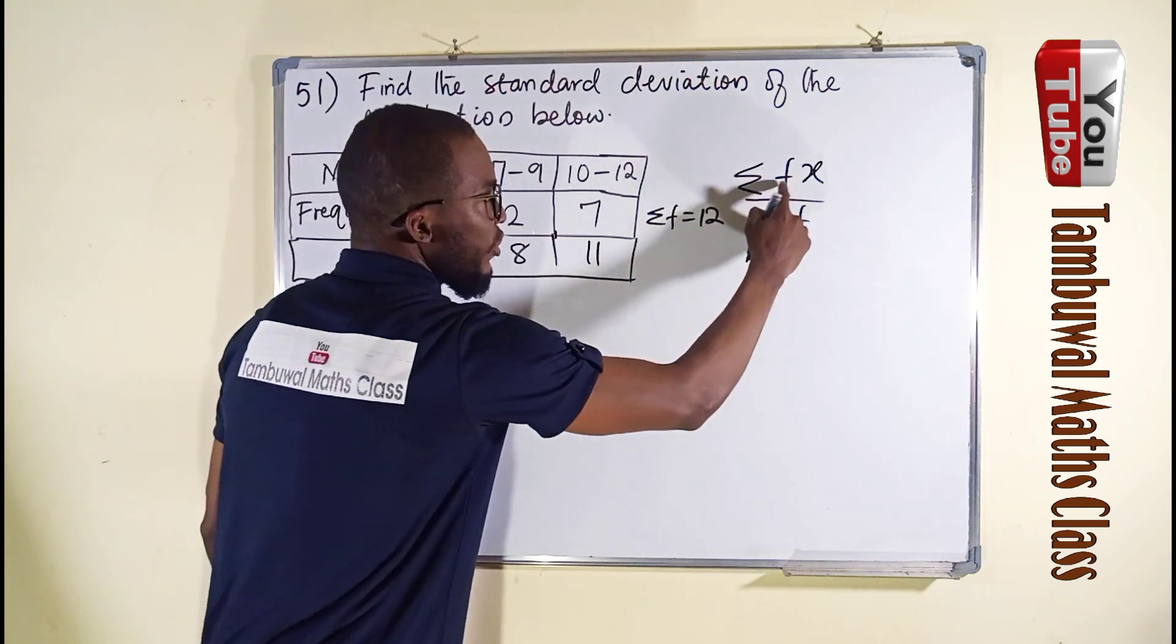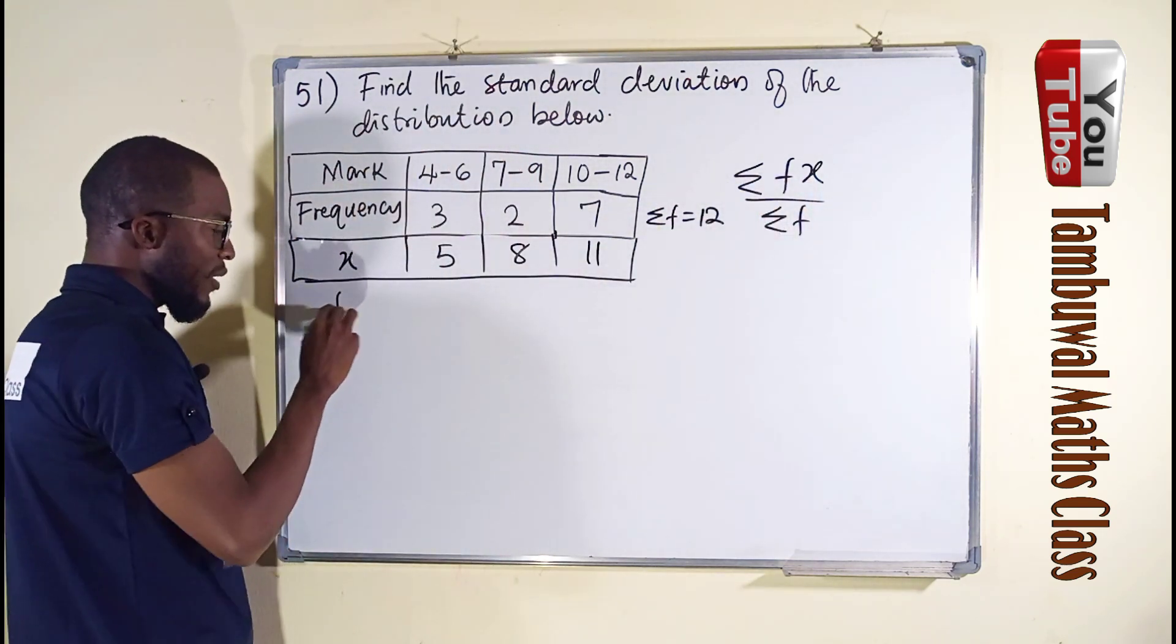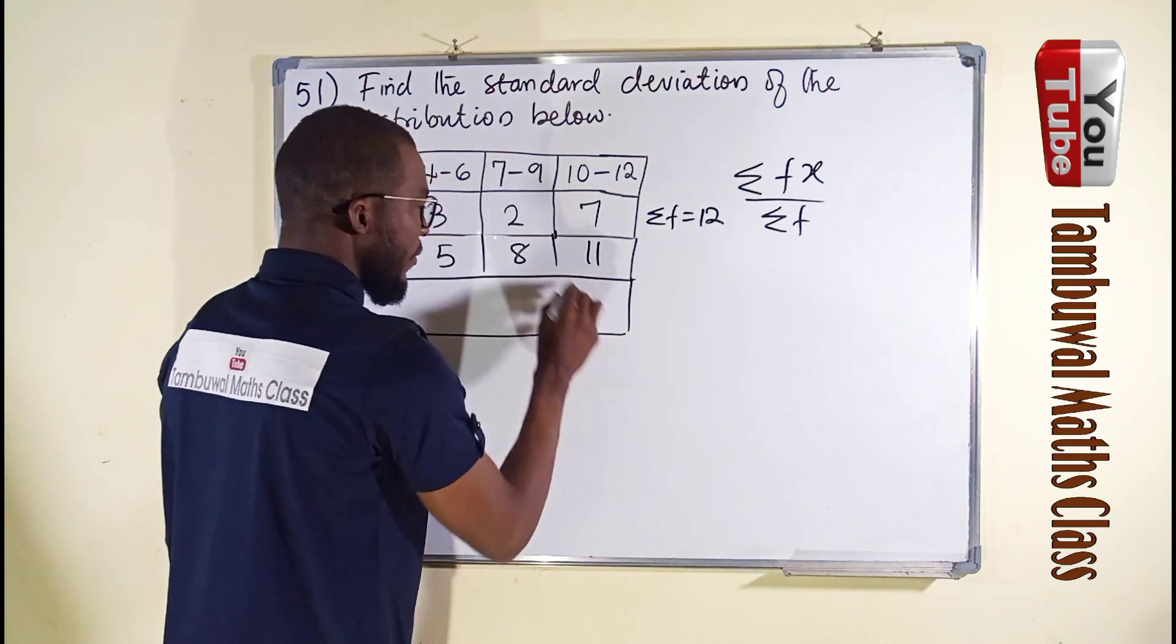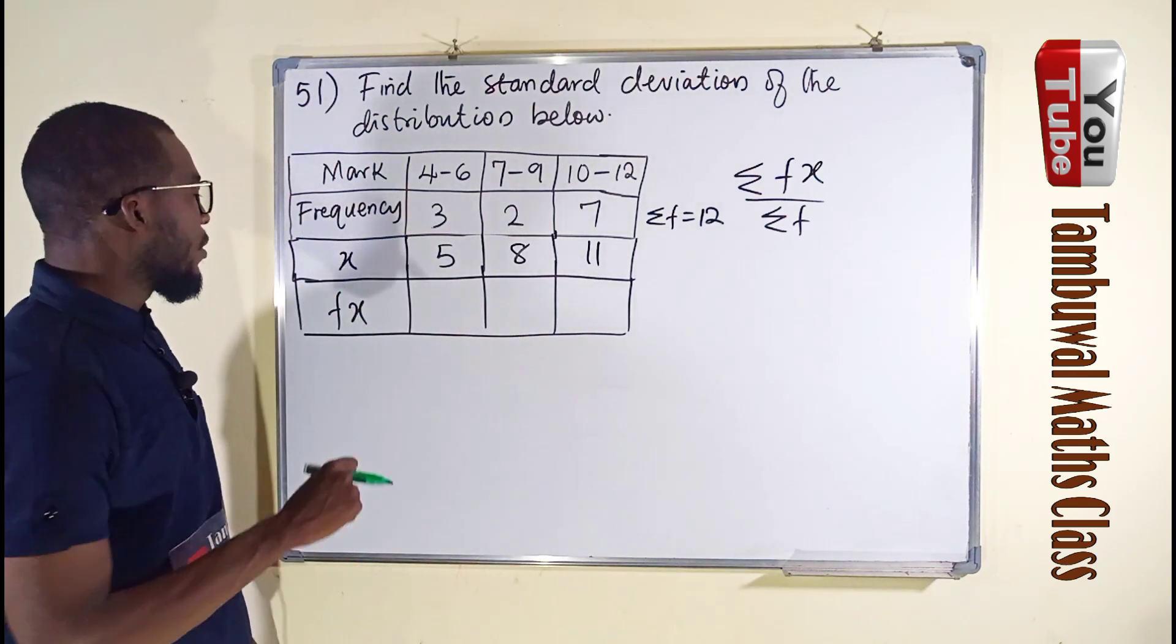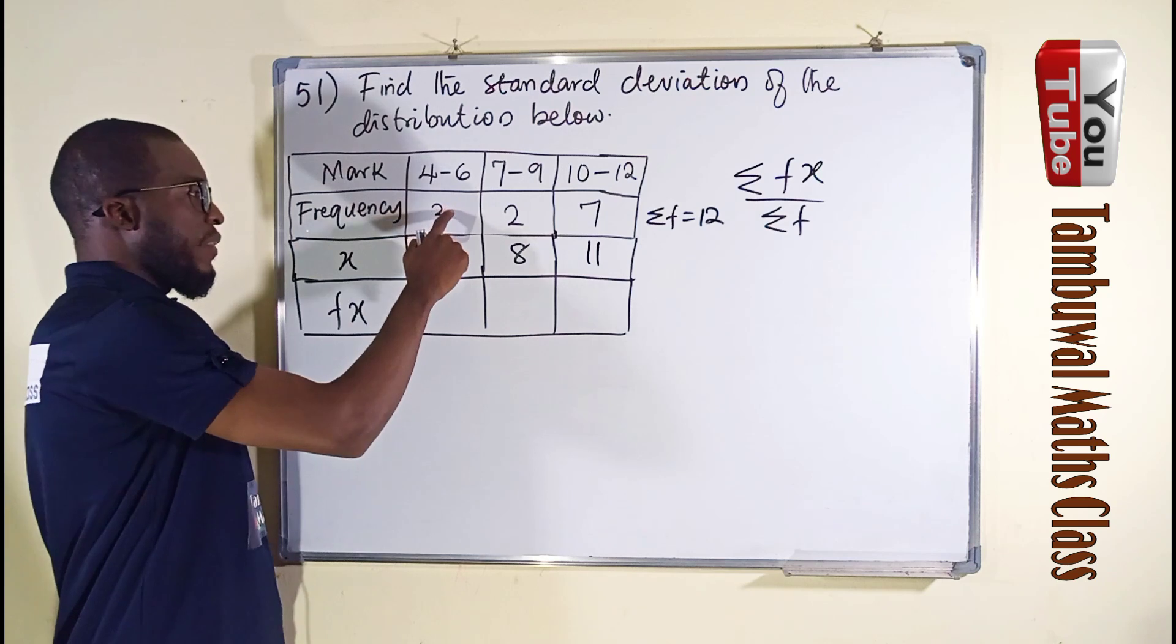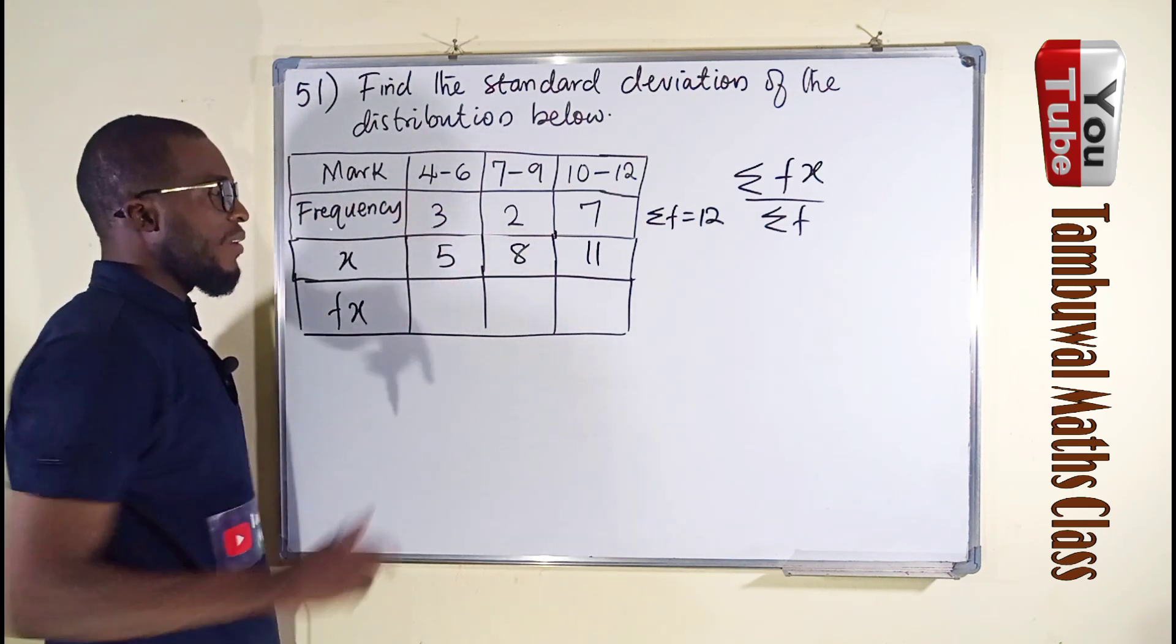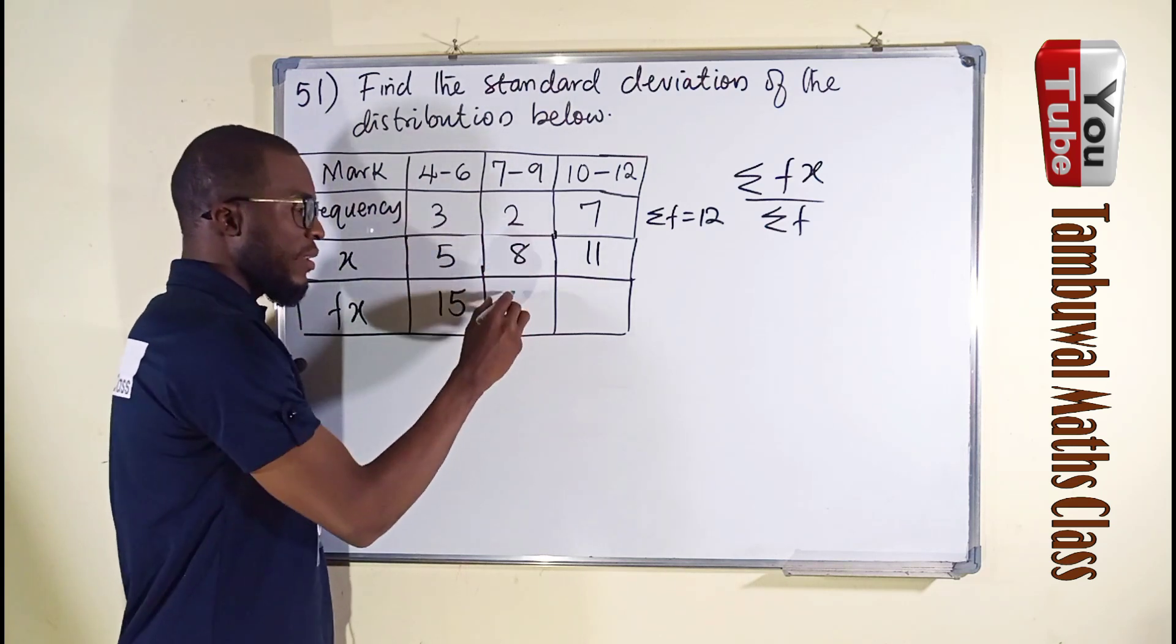What we are looking for is summation of fx, f times x. So we are now going to form another one, fx. We multiply x by f. This time this, f times x, 3 times 5 is 15, 2 times 8 is 16.